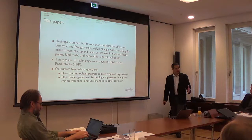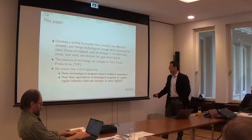Does technological progress reduce cropland expansion? And how does agricultural technological progress in a given region influence land use in other regions?